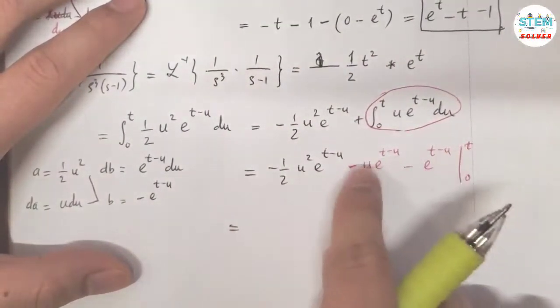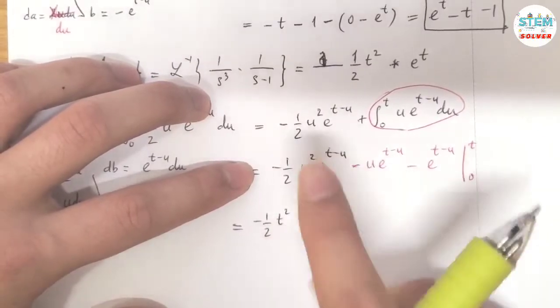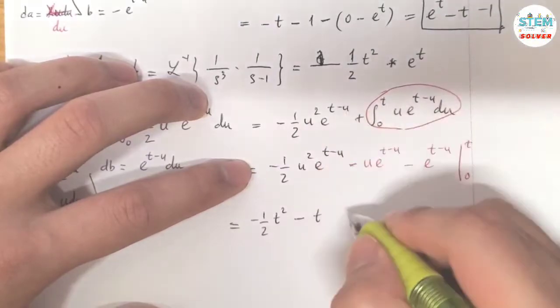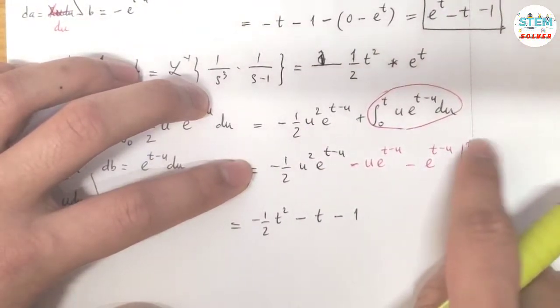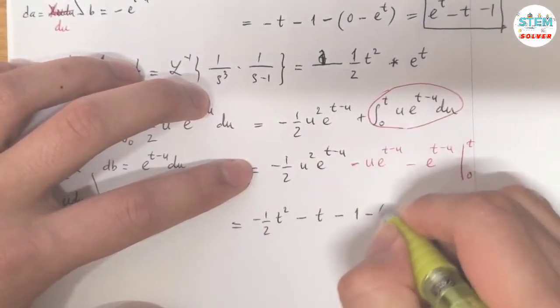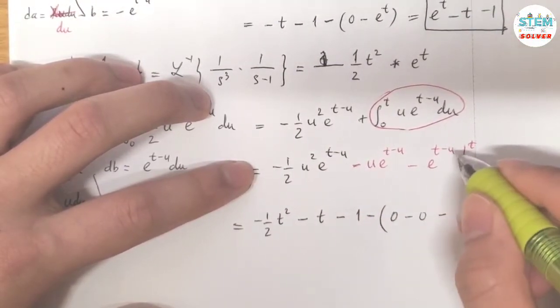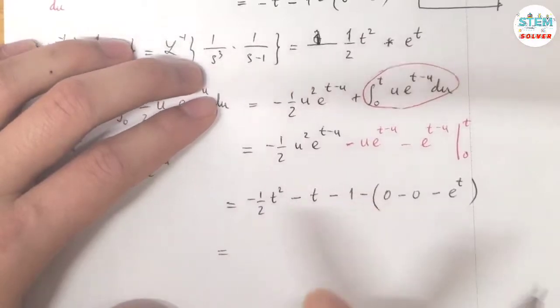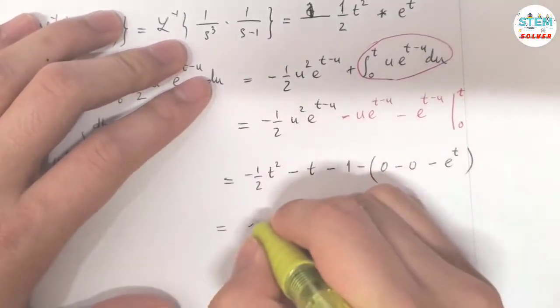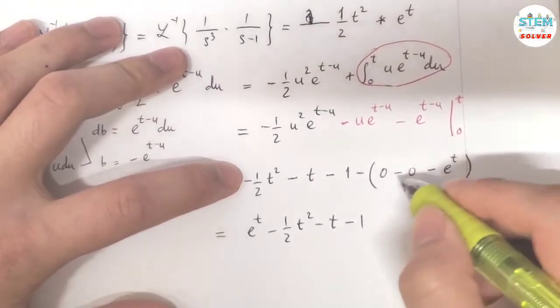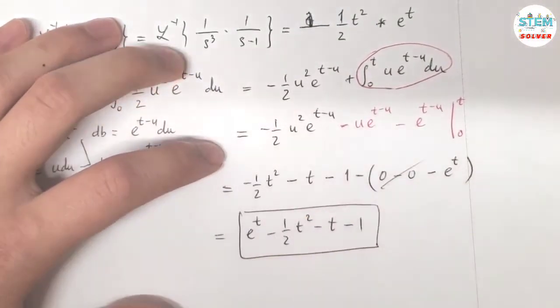Now plug in t. I have negative 1 half t squared e to the 0, which is 1, minus t e to the 0, which is 1, minus 1 e to the 0, which is 1, minus plug in 0. I have 0 minus 0 minus e to the t. Simplify: 1 half e to the t minus 1 half t squared minus t minus 1. Okay. So this is your final solution. That's it.